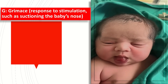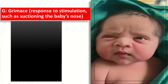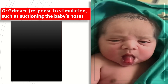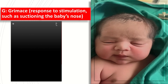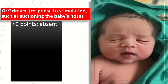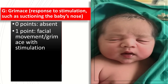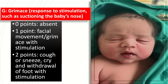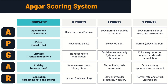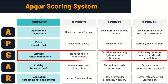Next is the letter G, which indicates the grimace response to stimulation such as suctioning the baby's nose. 0 points indicates that the grimace is absent. When there are facial movements or grimace with stimulation, we give 1 point. We give 2 points when the baby coughs, sneezes, or cries, and there is withdrawal or recoil with stimulation. Here the APGAR scoring system chart indicates G for grimace and the different points given in different situations.